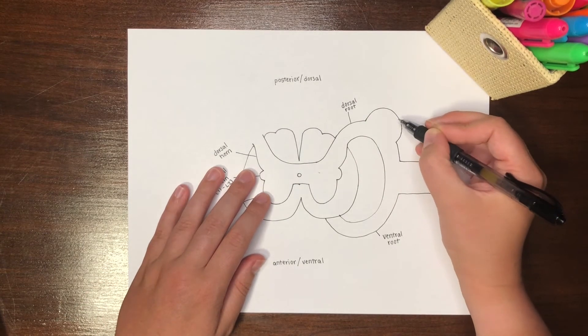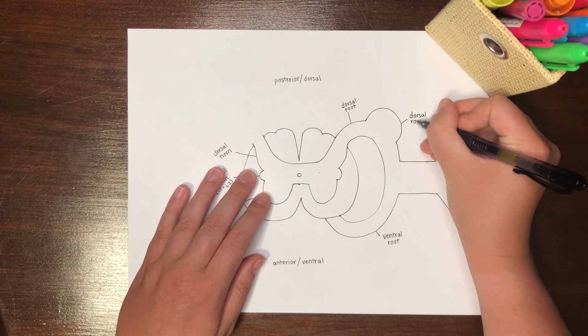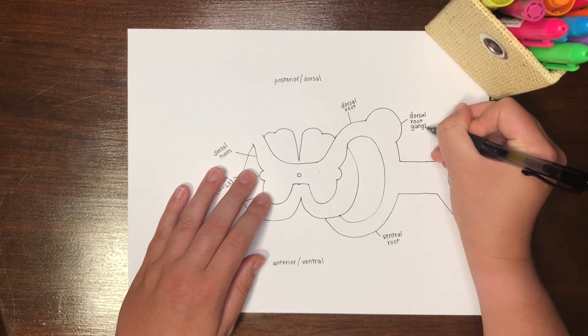The bulge in the dorsal root is called the dorsal root ganglion. A ganglion is a collection of neuron cell bodies in the peripheral nervous system.